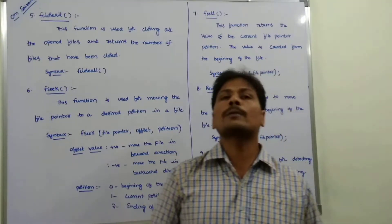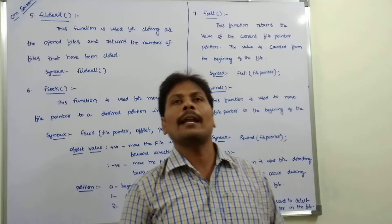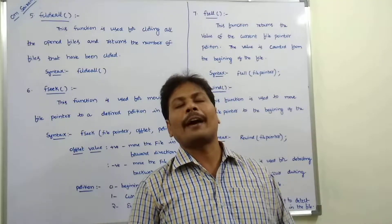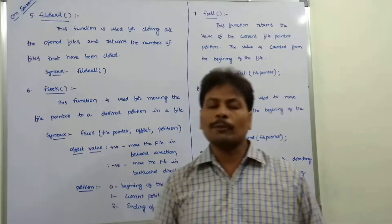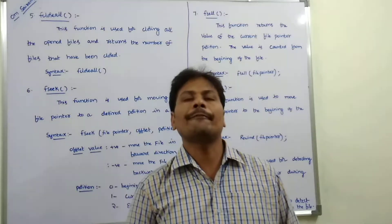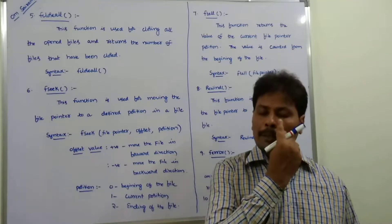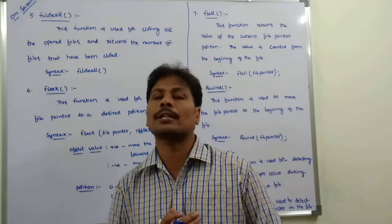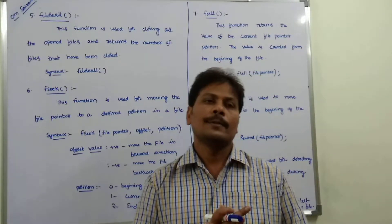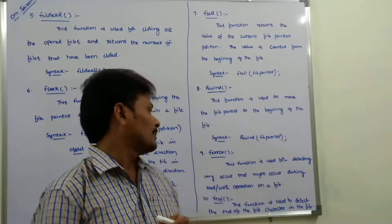The next function is rewind. This function moves the file pointer to the beginning of the file. For example, if a file has 10,000 characters and the file pointer is at the 555th character, calling rewind will move the file pointer from the 555th character back to the 0th character. The syntax is: rewind(fp).